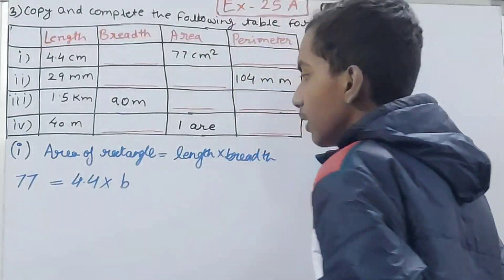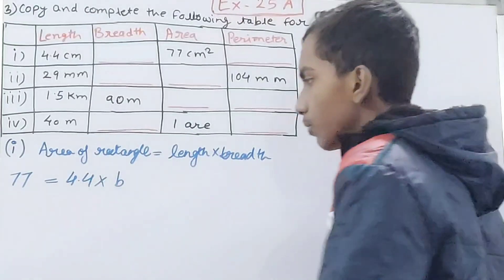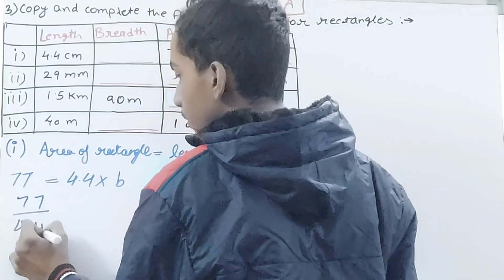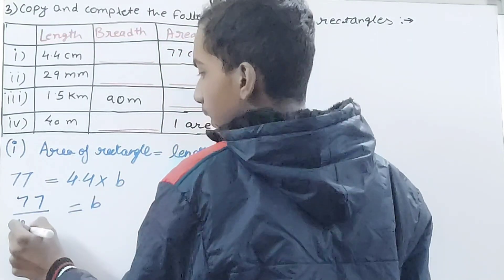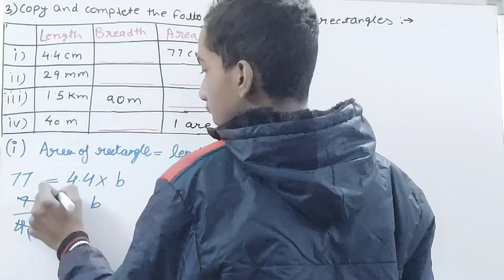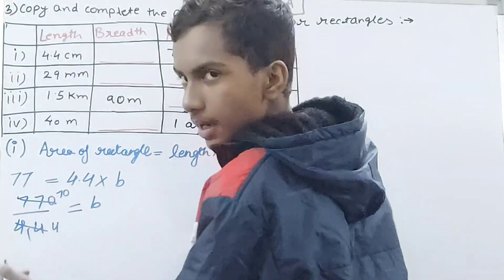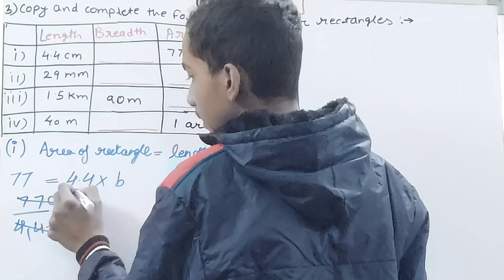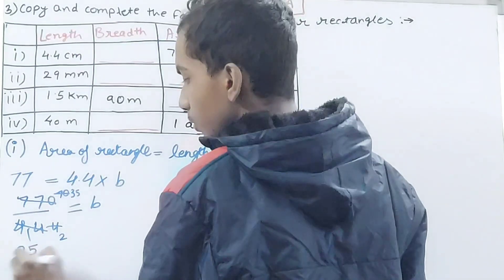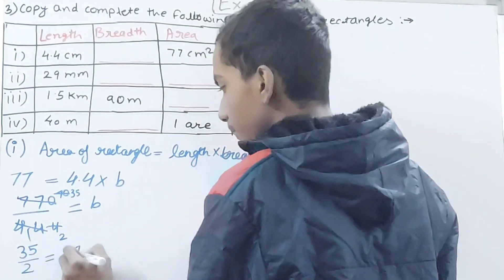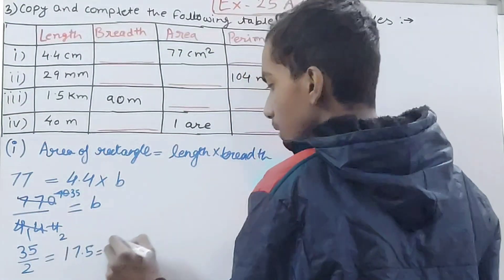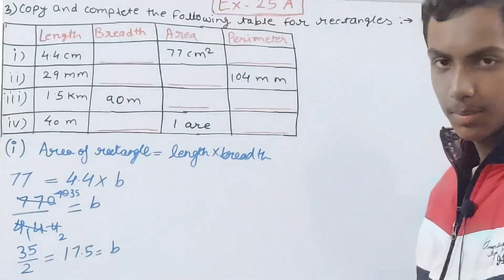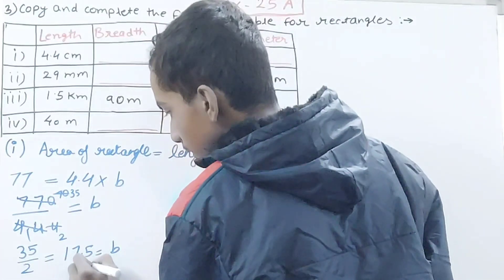So breadth equals 77 divided by 4.4. Simplifying: 770 divided by 44 — cancel to get 35 divided by 2 — that gives us breadth = 17.5 centimeters.